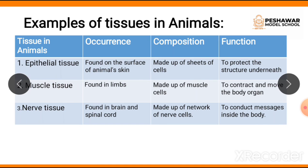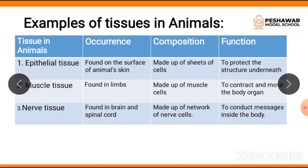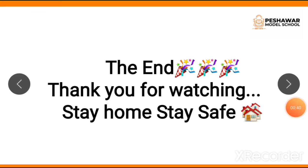The third animal tissue is nerve tissue, found in the brain and spinal cord. It is made up of a network of nerve cells, and its function is to conduct messages inside the body — sending messages to the brain. That was all about tissues in plants and animals. Thank you for watching; stay home, stay safe.